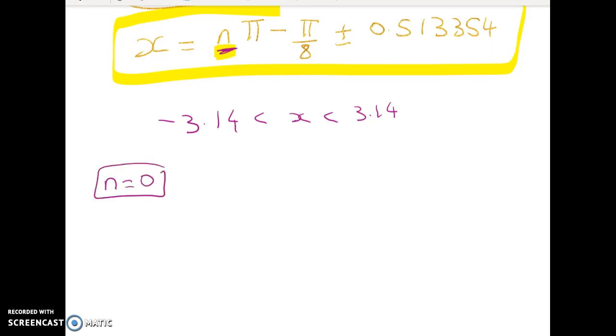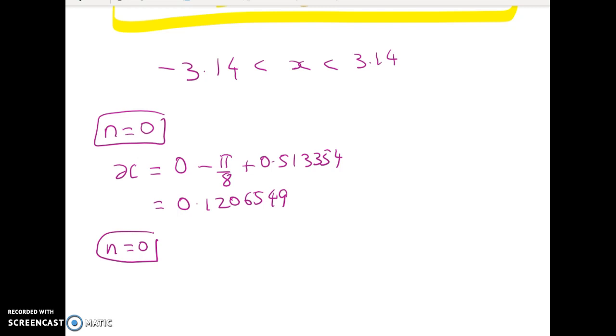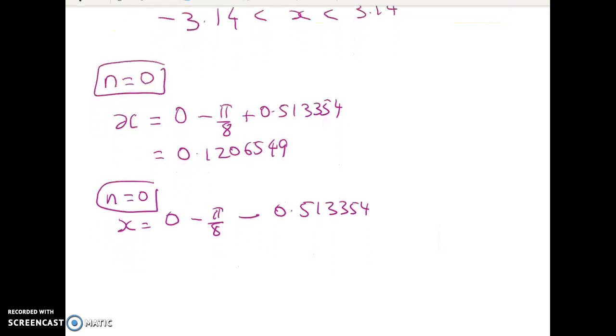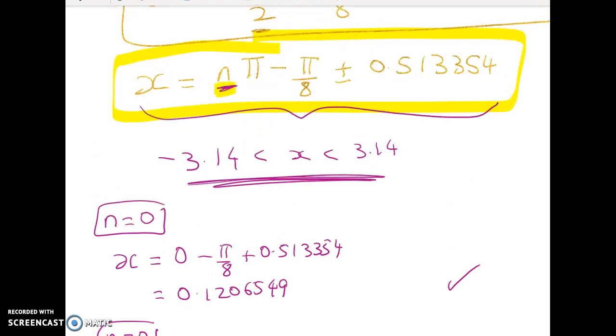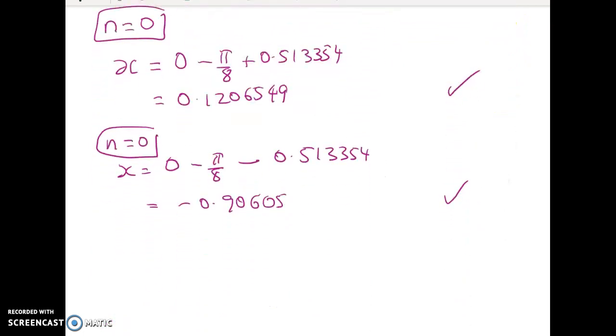So when I do this, I always start with n equals 0, and I've got two cases. So the first one is x equals 0π, so it's going to be 0 minus π/8 plus the big long number. That gives me 0.1206549. And then I do the next one for n equals 0, which is x equals nπ minus π/8 minus 0.513354. That gives me negative 0.90605. Now I look at each of those and I check, are they in the domain? Yes, they are.